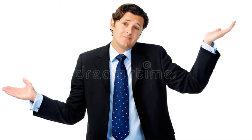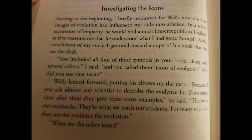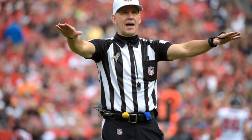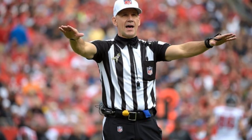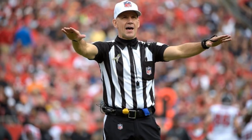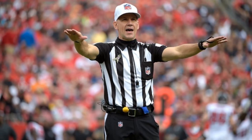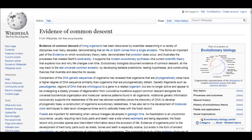Let's start on page 36, beneath 'Investigating the Icons.' Starting at the beginning, Strobel briefly recounts for Wells how the four images of evolution had influenced his slide into atheism. He asks Wells why he used the term 'icons of evolution.' Wells replied: 'Because if you ask almost any scientist to describe the evidence of Darwinism, time after time they give you these same examples. They're in our textbooks. They're what we teach our students. For many scientists, they are the evidence of evolution.' Let's take a brief timeout — while Stanley Miller's experiment, Darwin's Tree of Life, Ernst Haeckel's drawings of embryos, and the Archaeopteryx fossils are all famous topics in the broader subject of evolution, they are most certainly not the evidence of evolution for many scientists. One needs only an internet search engine to be flooded with an abundance of other examples. Even if Wells manages to soundly refute his icons, there's still a larger picture here.